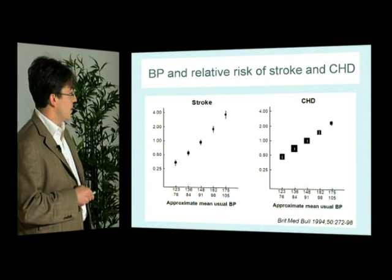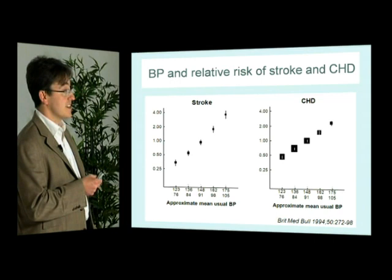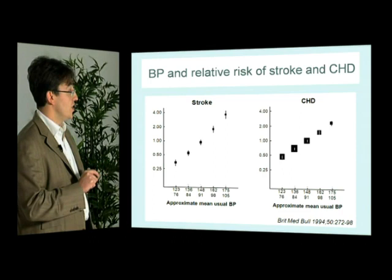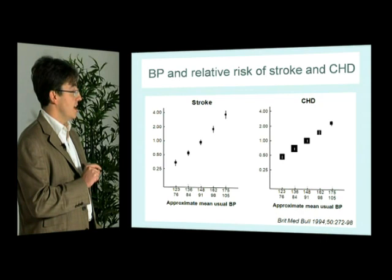In this slide on the left you see the relationship between blood pressure and stroke. From a normal blood pressure of around 123 over 76 mmHg rising to 175 over 100, there is an almost 16-fold increase in stroke risk, clearly showing how important good blood pressure control is. A very similar relationship is seen on the right-hand slide for coronary heart disease — as blood pressure rises there is a marked increase in risk.